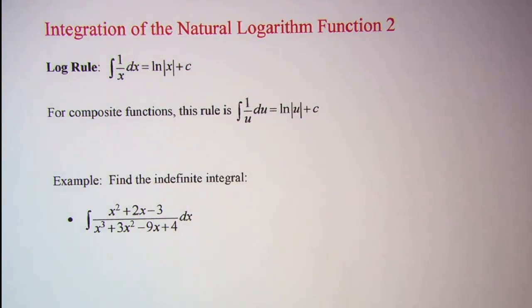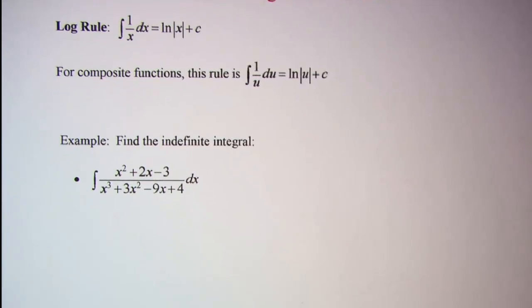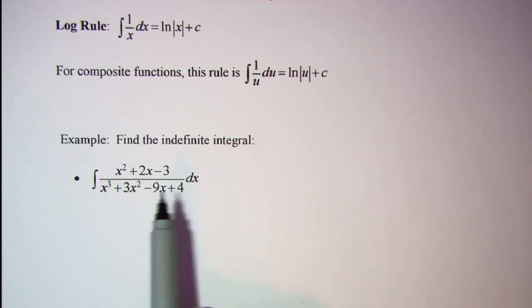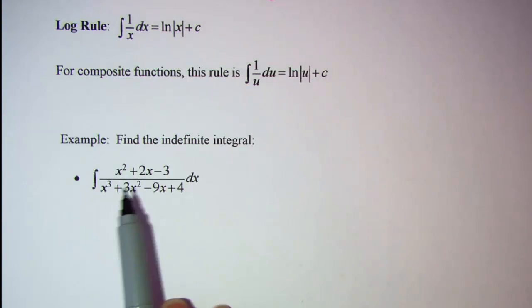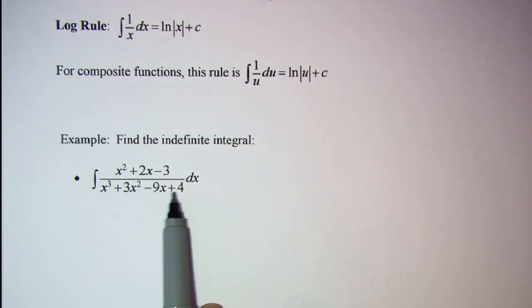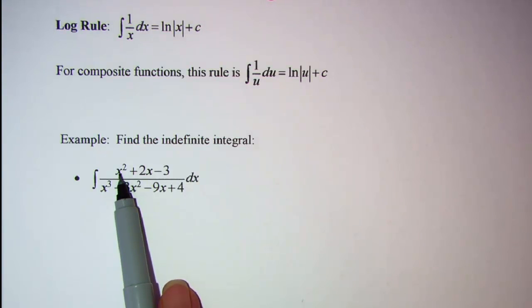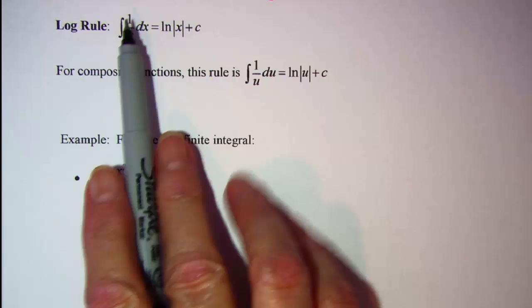Our first example is to find the integral of x squared plus 2x minus 3 over x cubed plus 3x squared minus 9x plus 4. Notice that the degree of the denominator is one more than the degree of the numerator, so we need to use our log rule.